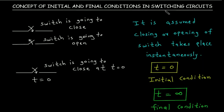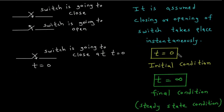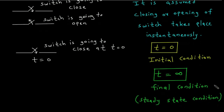This video covers the concept of initial and final conditions in switching circuits. The arrow representing a closing switch and the arrow representing an opening switch are defined. t=0 represents the instant at which the switch closes. It is assumed that closing or opening of the switch takes place instantaneously. t=0 represents the initial condition, and t=∞ represents the final or steady state condition.